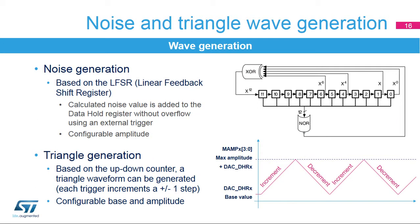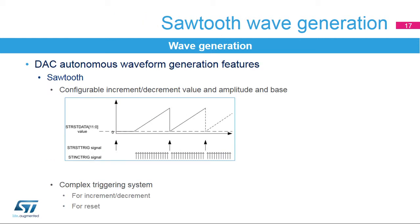The DAC digital interface integrates three special signal generators: noise, triangle, and sawtooth. The linear feedback shift register can create a noise signal for the DAC input. Each trigger updates the DAC output data via an LFSR block. An up-down counter with a programmable count value can create triangle wave data to update the DAC output. The data can also be updated by a trigger signal. The DAC can generate a sawtooth waveform, requiring specific register settings for the initial value, increment value, and direction control.